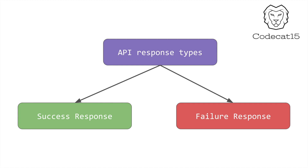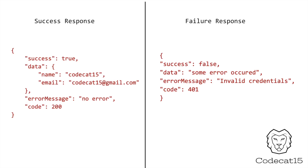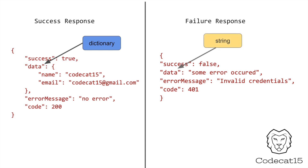Let me show you a JSON response where things are slightly complex. Let's say an API returns you the following response. On the left-hand side I have a success response and on the right-hand side I have a failure response. If you pay attention to the data key, in the success case the data key is a dictionary, and in the case of failure the data key is a string. This is a classic example where the server uses the same key with two different types.